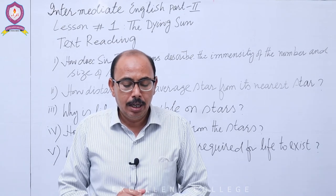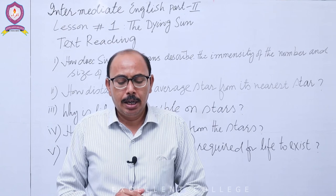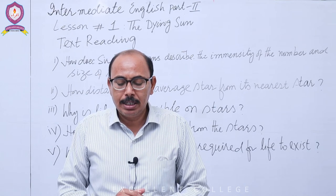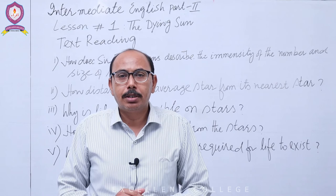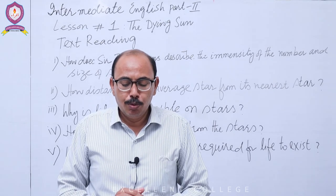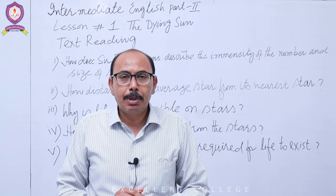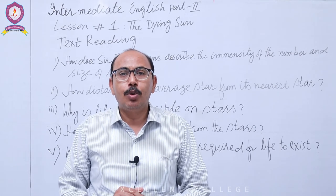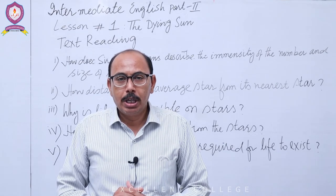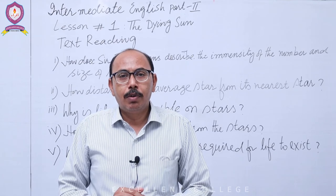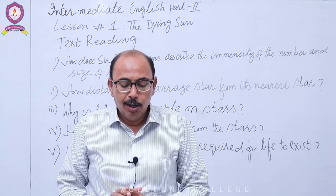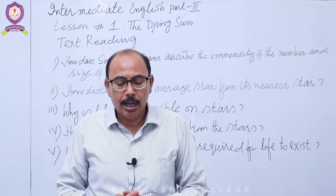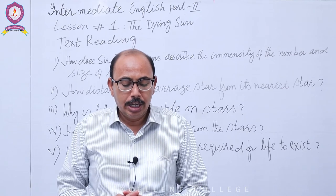ستارے زندگی کے وجود میں آنے کے لیے بہت زیادہ گرم ہیں — بالکل آگ کی طرح۔ Sir Jeans نے ستاروں کو fires سے تشبیہ دی ہے — یہ آگ کے گولے ہیں جو space میں پھیلے ہوئے ہیں۔ ستاروں سے دور چلے جائیں تو خالی space ملتی ہے — 'empty space' — وہاں درجہ حرارت کیا ہے؟ Sir James Jeans کہتے ہیں کہ وہاں absolute zero سے صرف چار degrees زیادہ ہے۔